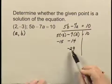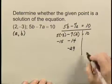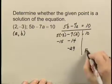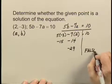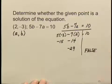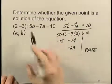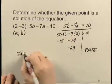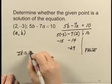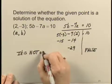Now, negative 29 equals 10 is a false statement. Therefore, the ordered pair — the given point — is not a solution of the equation.